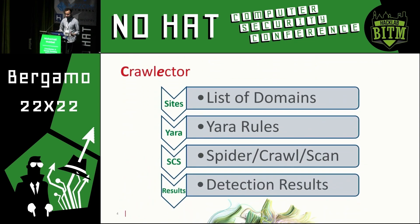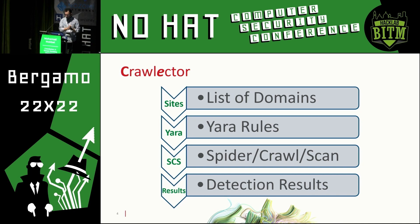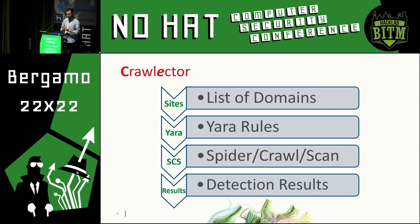So Crowlector — what is it like at a very high level? What does it consist of? The framework follows these four steps. First, you give it a list of domains — that's the input — along with a set of YARA rules. Then it goes into searching these domains by spidering the pages and crawling them. There is a difference between a spider and crawler which I will explain later. Then it detects suspicious objects on these pages, and upon a detection it gives you results.